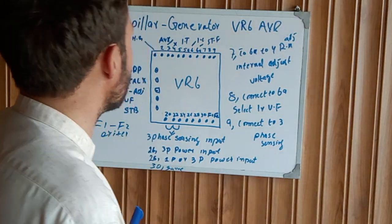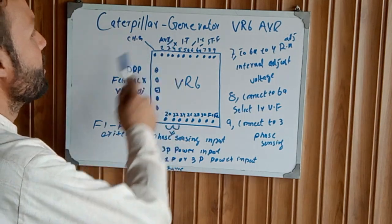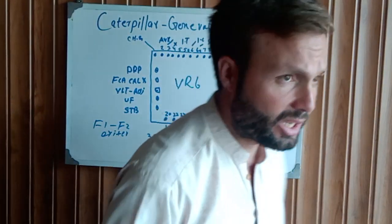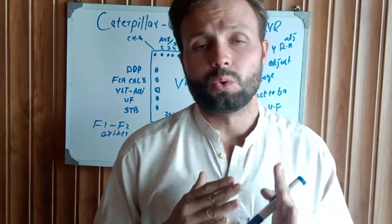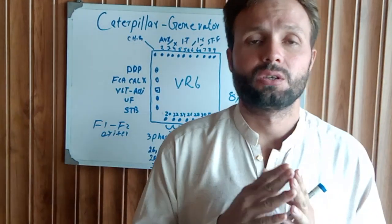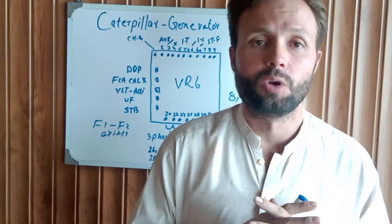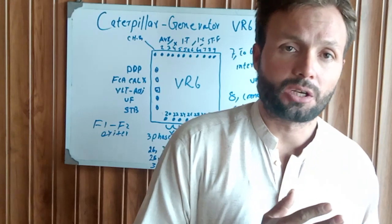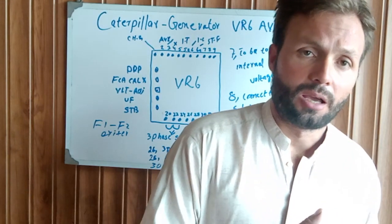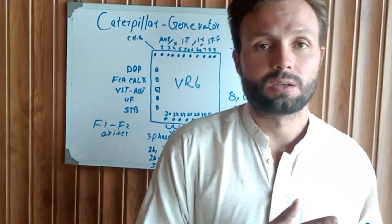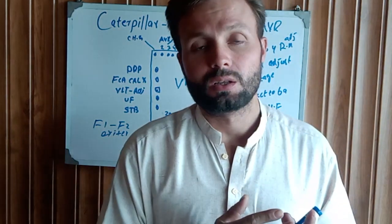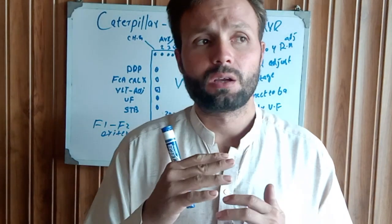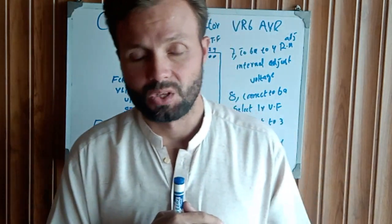Let me explain. I drew the diagram of Caterpillar Generator AVR VR6. Basically, the AVR works to adjust the generator voltage automatically. When the generator speed is increased, the AVR decreases the excitation system. When the generator speed is decreased, the AVR increases the excitation voltage to the excited system. This keeps the generator voltage stable.